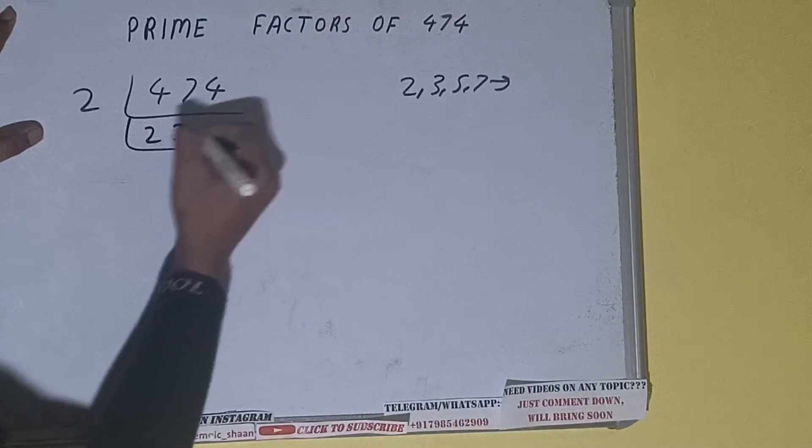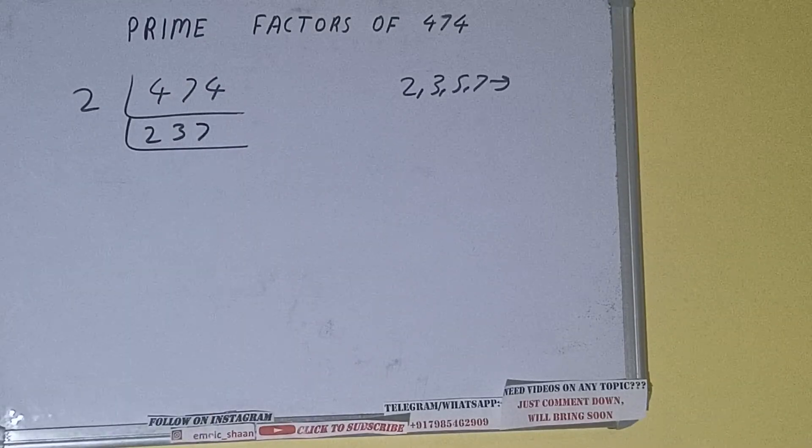So divide it and we'll be having 237. Now is this 237 further divisible by 2? The answer is no, because the number is odd.